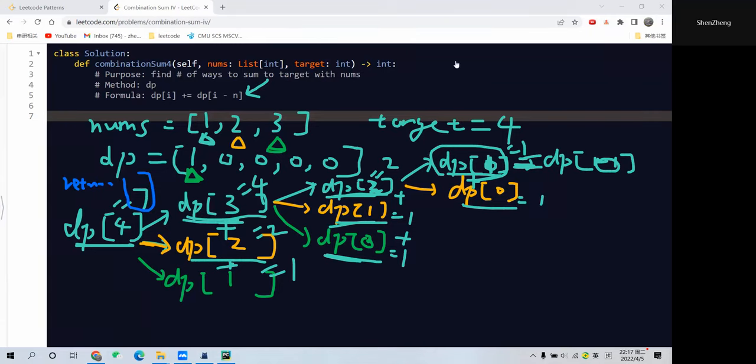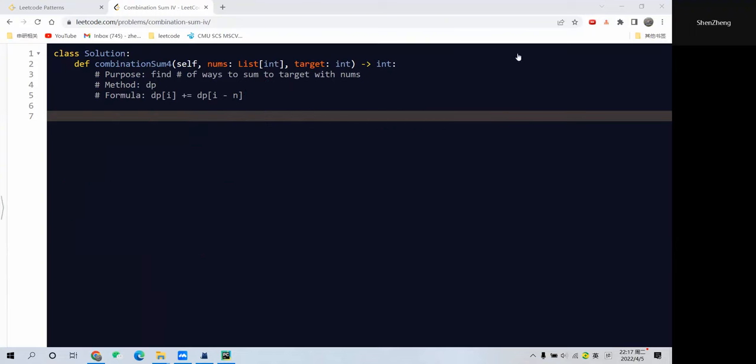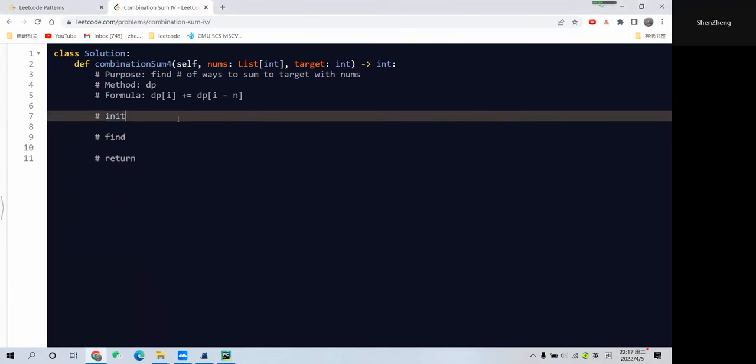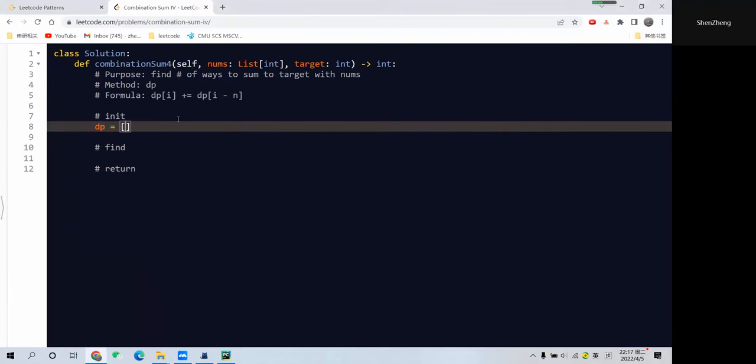Now finishing the graphical explanation, let's start into the coding part. For the DP version, we need to follow this general framework. The first thing to do is initialize the array. 1 is the base case, 0 is the default value. And it should be the length of target plus 1.